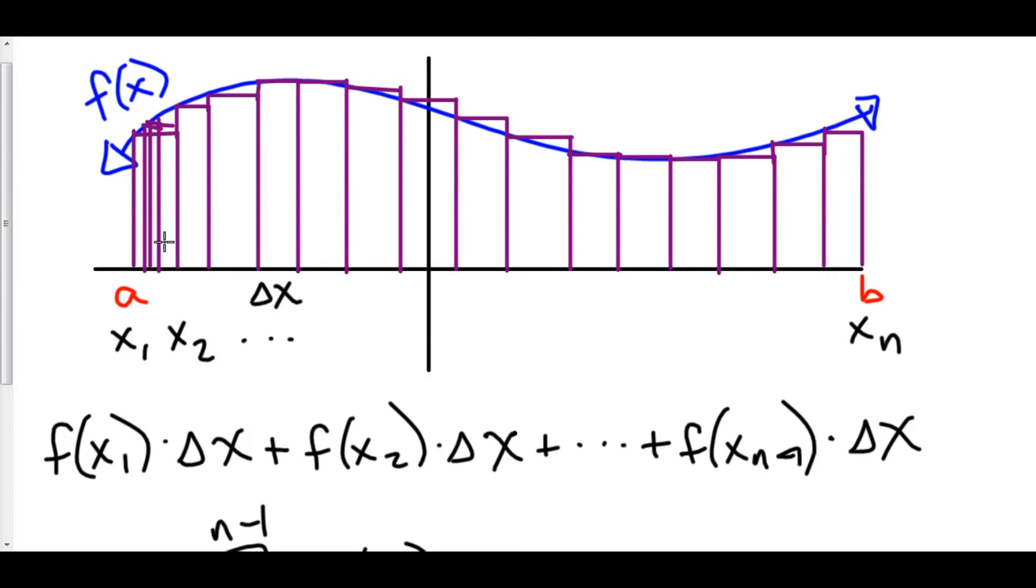Well, when are we going to get infinite accuracy? When we have an infinite number of rectangles. So imagine an infinite number of rectangles in here. What does that mean about n? Well, if we have an infinite number of rectangles and if n is the number of rectangles that we have, or n minus 1, that means that n minus 1 or n is going to infinity.